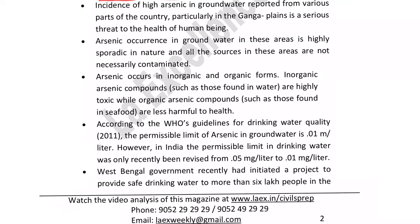Incidence of high arsenic in groundwater is reported across the country and mostly it is present in the Ganga plains, which is a serious issue because around 40 to 50 percent of the people live there and their livelihoods are affected. An important point is that when talking about inorganic and organic forms of arsenic, it is the inorganic form present in water which is highly toxic, whereas organic arsenic compounds consumed through fish or other organisms are less harmful. So the inorganic form is more threatening — be careful if a question says organic arsenic is more harmful.